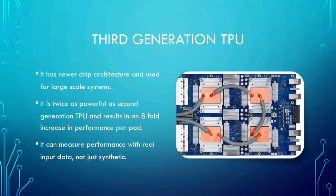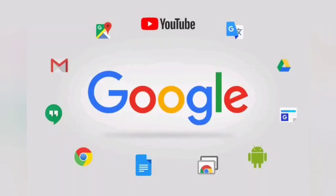The training and running of deep learning models can be computationally demanding. It is where TPU comes into picture. This technology is being used by Google in their various major products like Translate, Photos, Search, Assistant, and Gmail. TPUs are advantageous in acceleration of computational performance.